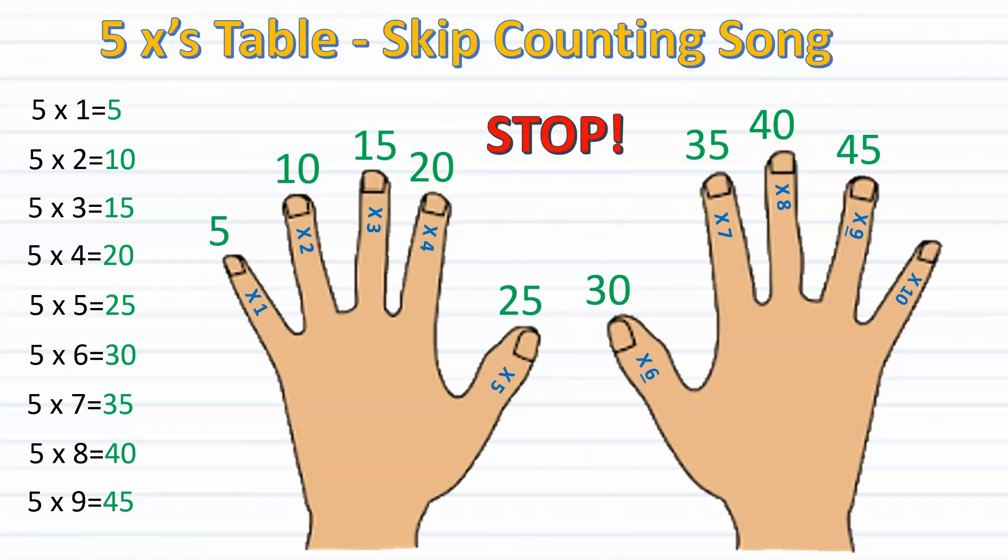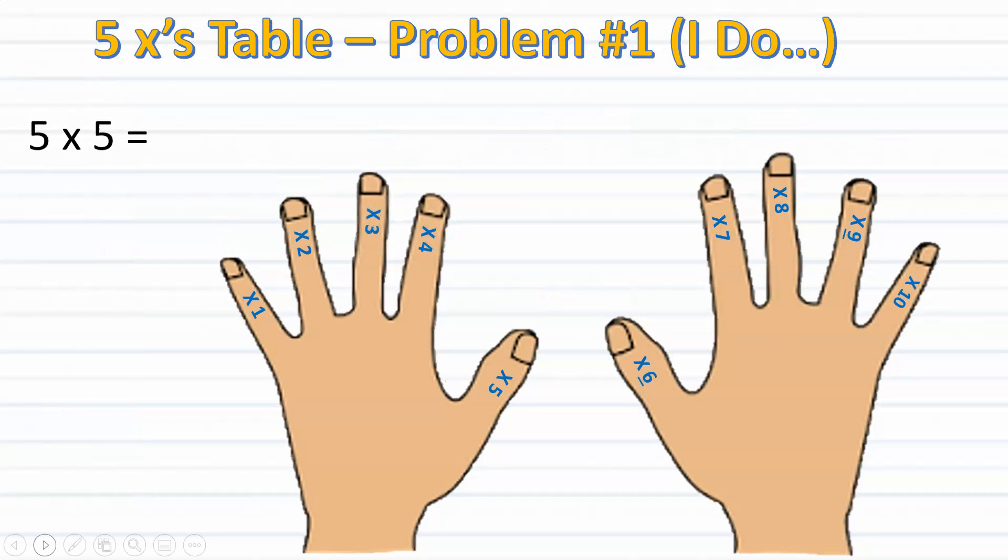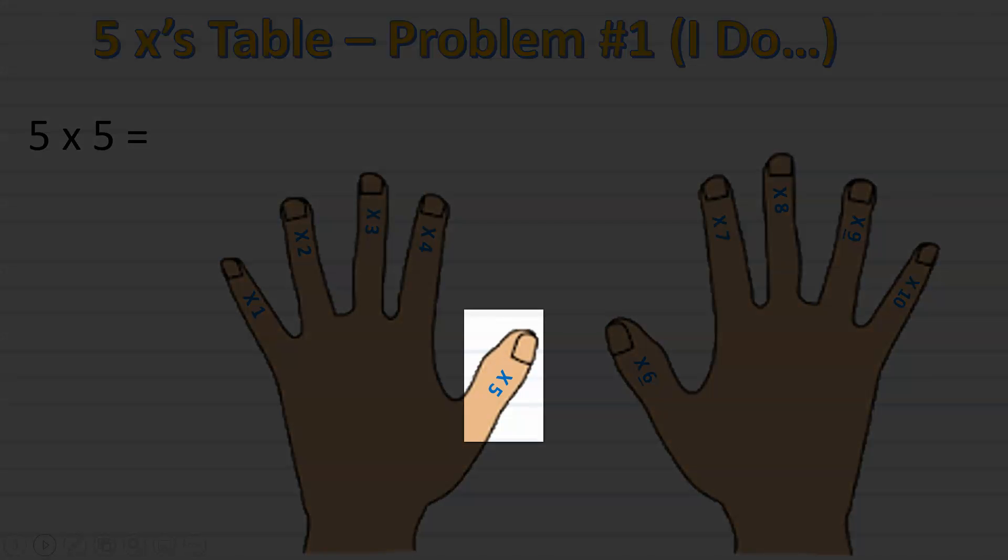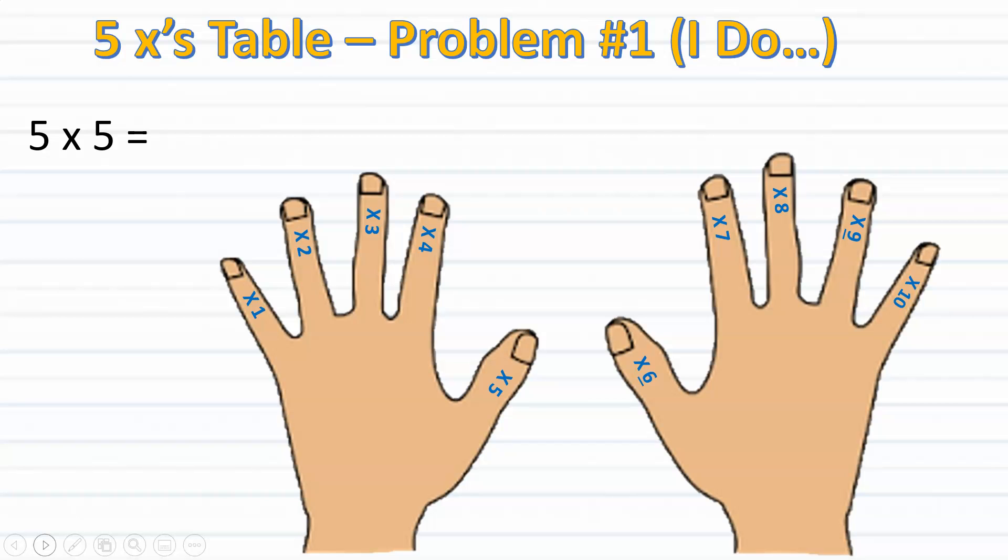Now I think we're ready to use this song to solve for multiplication facts. So here we have our first problem, 5 times 5. I will model for you how to use the skip counting song to solve for it. Listen and watch carefully as to how I count off each finger as I sing. Since I will be skip counting by fives, I have to remember to stop at my fifth finger since I'm multiplying 5 times 5.